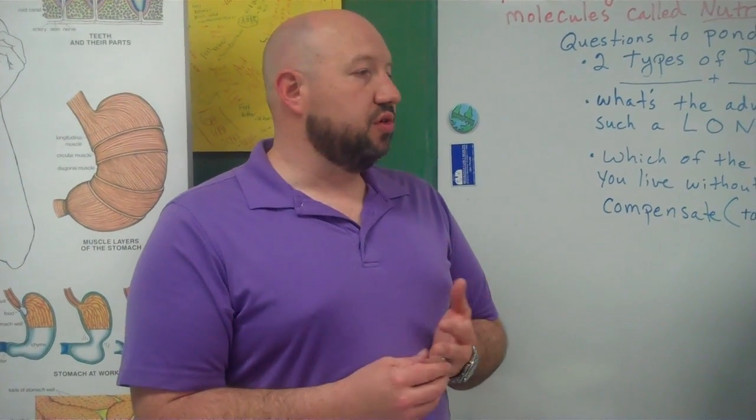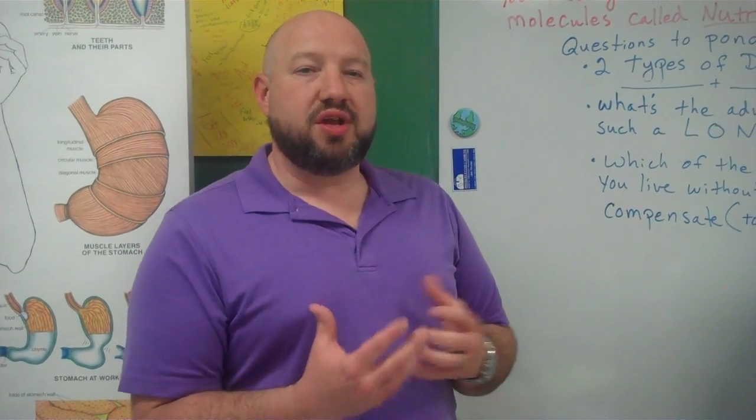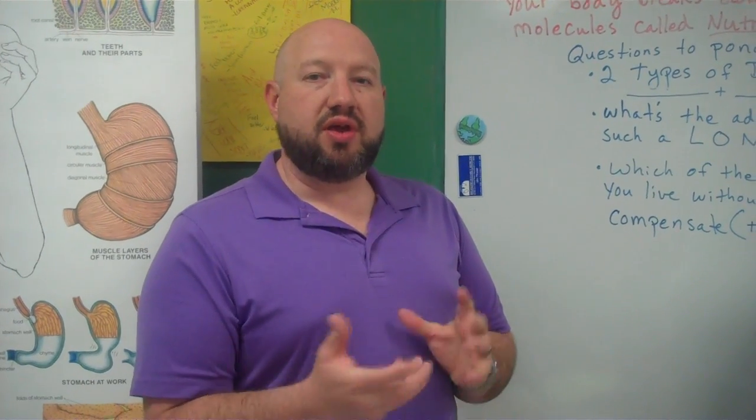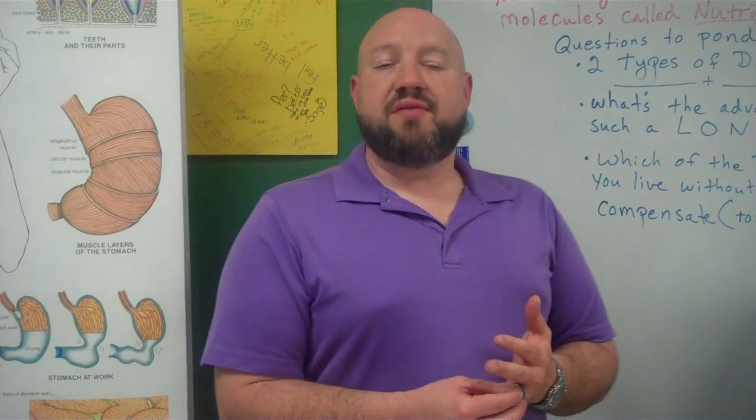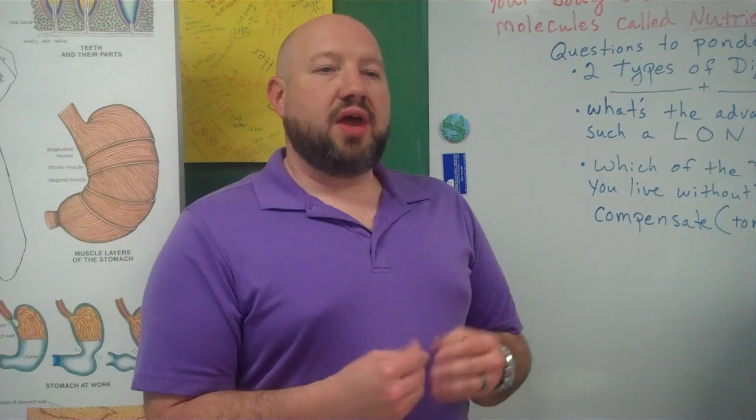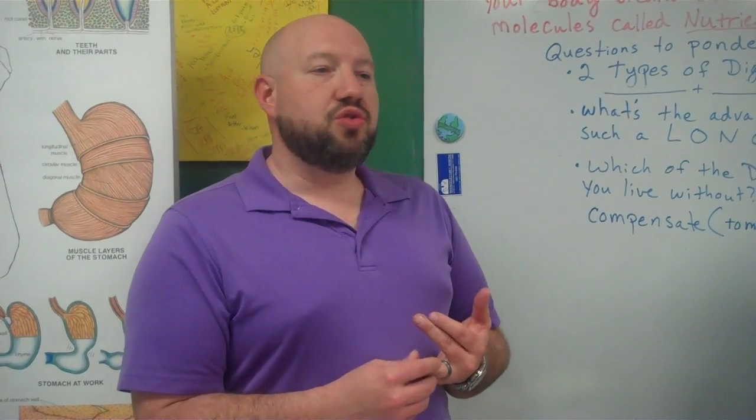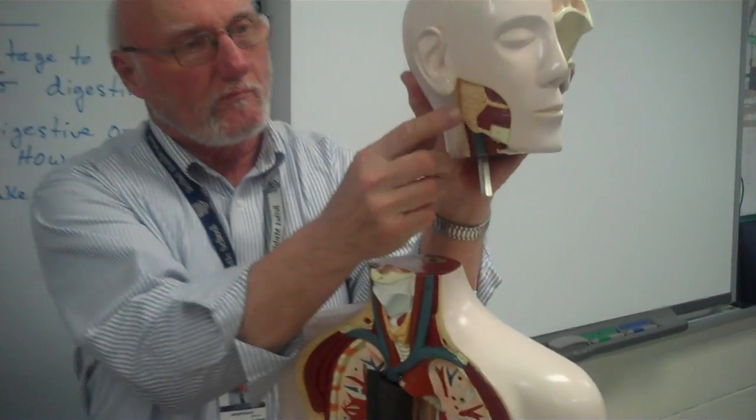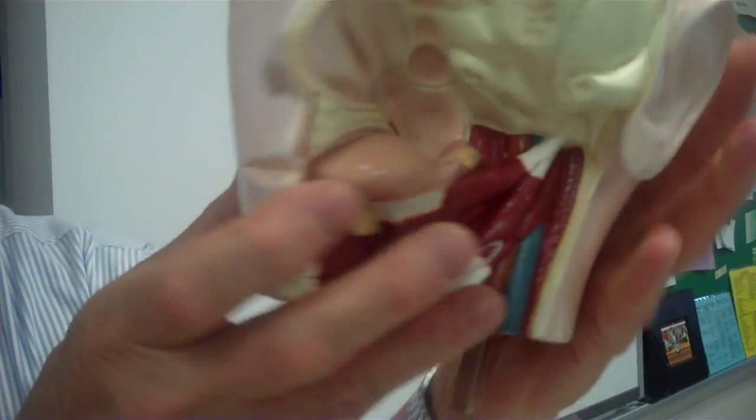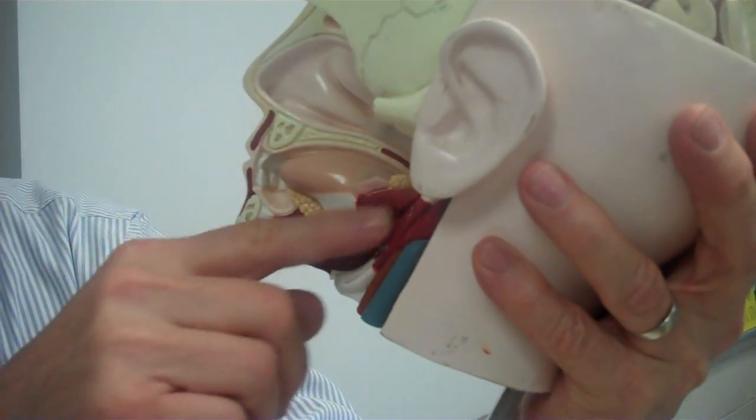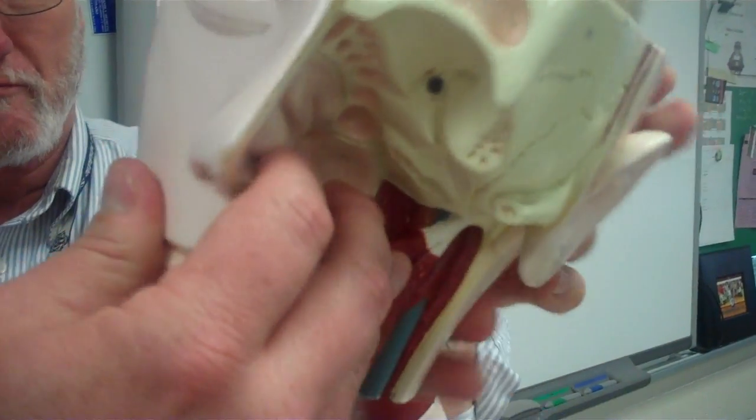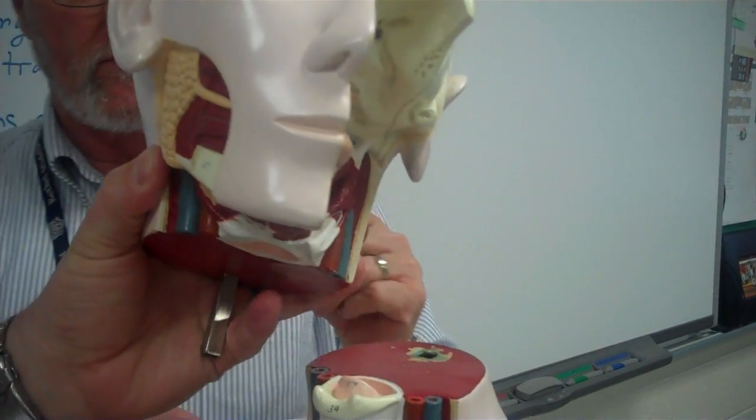You have the tongue, which is also for mechanical digestion. It helps move things around in your mouth. It helps push it towards your teeth so that it grinds it better. It also helps push it back towards the back of your throat when you swallow. And you also have a salivary duct that the saliva actually goes through before it goes into the mouth. It's actually controlled when it goes into the mouth.